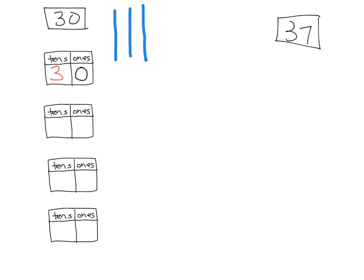Another way we can think of 30 is we could take one of these tens — these quick tens — and chop it up into ten individual pieces, counting out ten ones. So now I still have the same amount, but now I have two tens and ten ones, because you can see right here — two tens and ten ones.